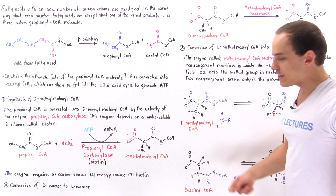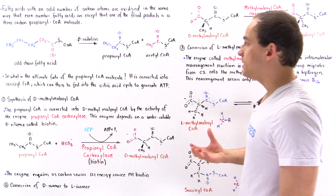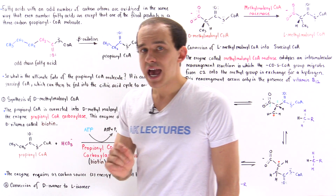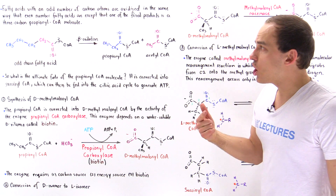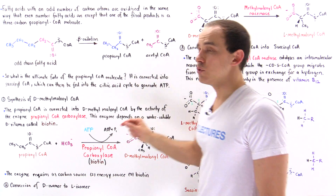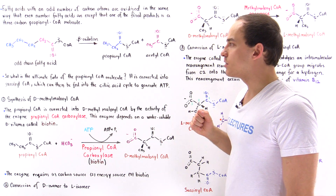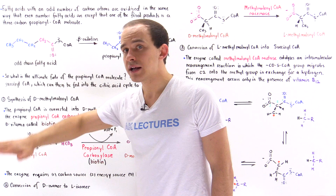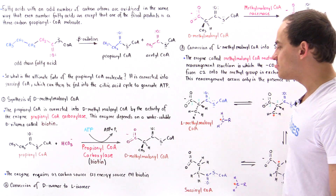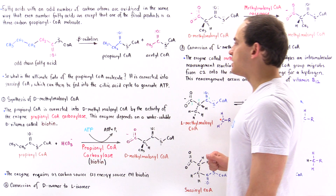Once succinyl coenzyme A is generated, it can enter the citric acid cycle to help generate ATP molecules. Any fatty acid with an odd number of carbon atoms undergoes beta-oxidation to generate acetyl coenzyme A molecules and one propionyl coenzyme A. The acetyl coenzyme A molecules are fed directly into the citric acid cycle, but the propionyl coenzyme A must undergo this three-step process to generate succinyl coenzyme A, which is then fed into the citric acid cycle.